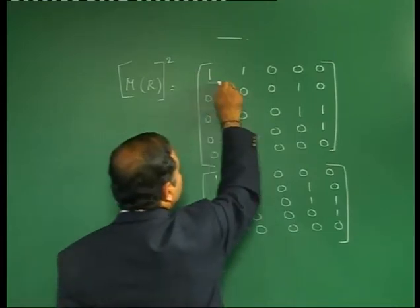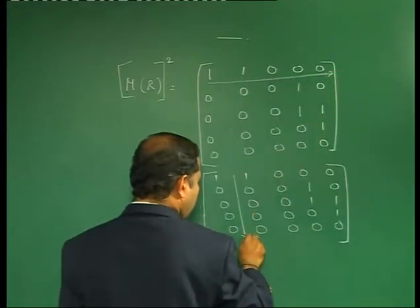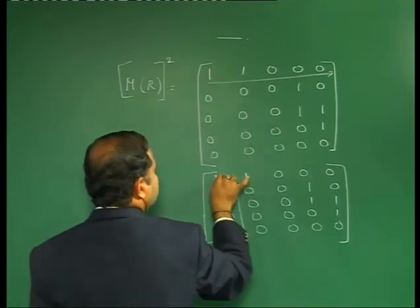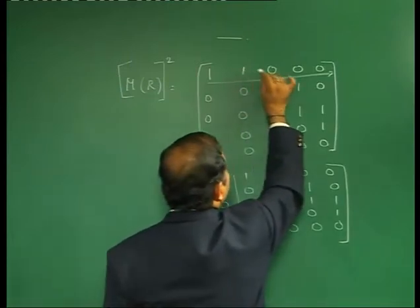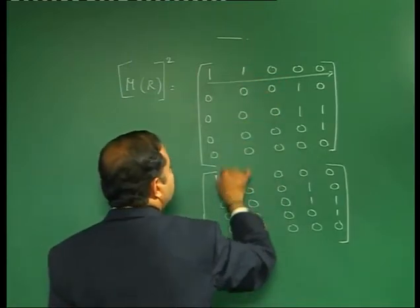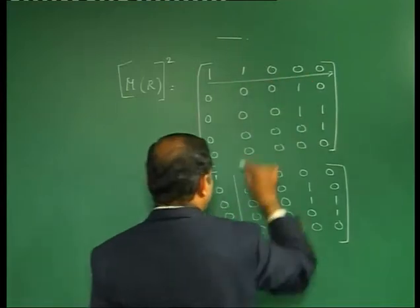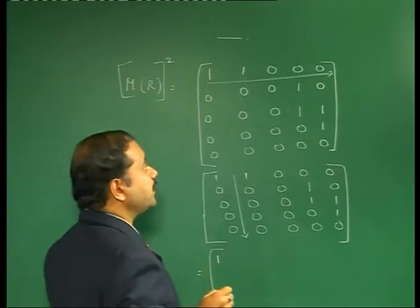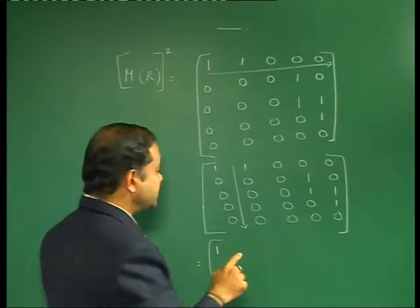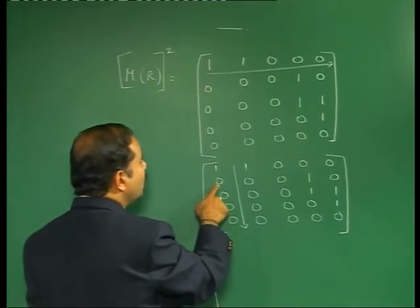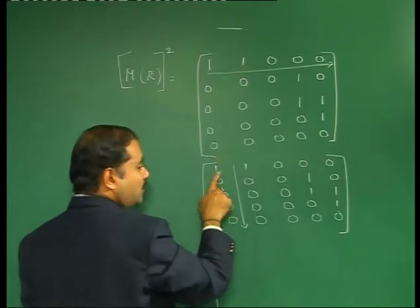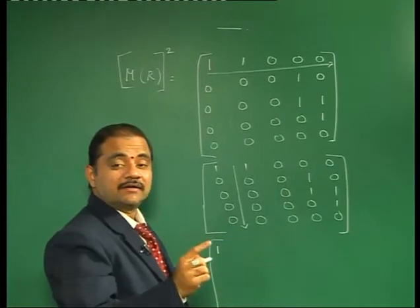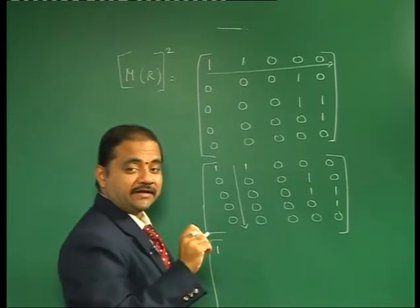For matrix multiplication, we take row times column with corresponding elements. Here, if you get a value of 2 by chance — say 1 into 1 plus 1 into 1 equals 2 — you should not write it as 2; it is 1 only. It is not regular matrix multiplication; it is relation multiplication. So we should not write 2, we should write 1 only.